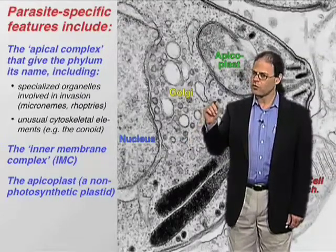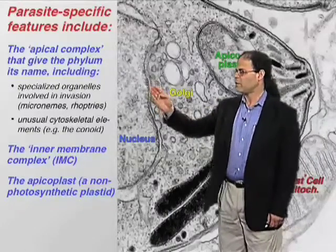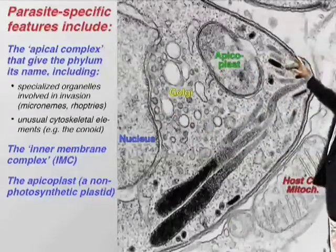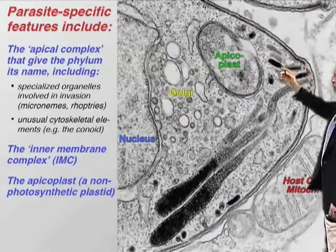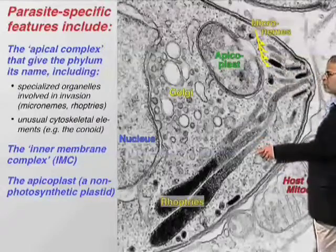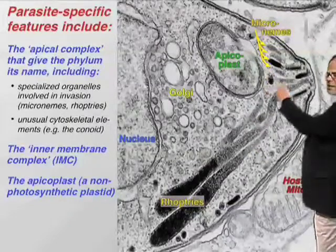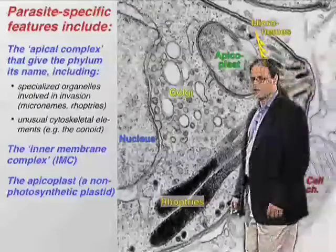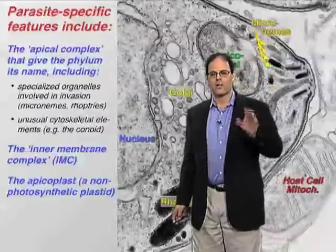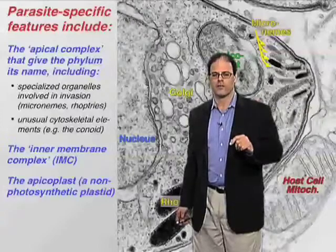But these parasites also harbor a variety of unique organelles, most notably the apical complex that gives the phylum its name. Up here at the apical end of the parasite, where invasion occurs, includes a variety of specialized organelles known as rhoptries, and smaller organelles, the micronemes, that play a key role in invasion. These apical complex organelles are responsible for secreting proteins essential for parasite invasion.